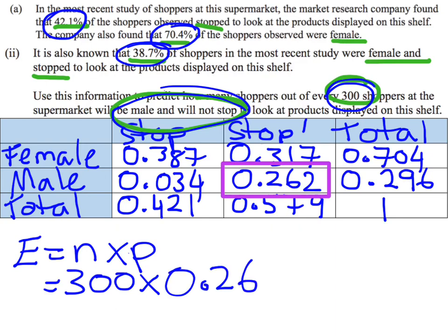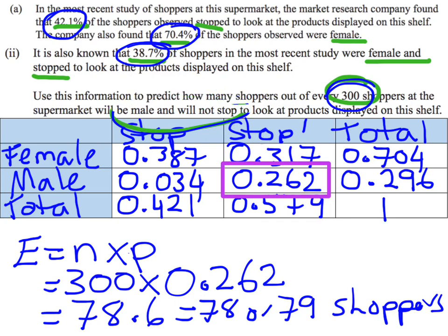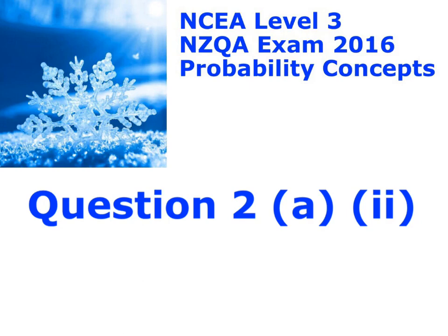So we do 300 times 0.262, and that gives me an answer of 78.6. Now I can't have 0.6 of a shopper, so I need to round this — that tells me there are either 78 or 79 shoppers. We predict that there are 78 or 79 shoppers that will be male and not stop out of the 300. And that was the answer to question 2A part 2.